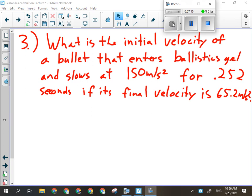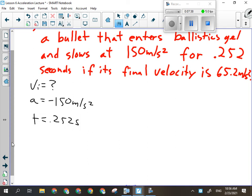We're looking for the initial velocity on this one. So we're looking for VI. It enters the ballistics gel and slows at 150 meters per second squared. What do I need to put in front of that number? Negative. For 0.252 seconds. And its final velocity is 65.2 meters per second. So this one is through and through. That means they fired at the ballistics gel and the bolt went right through and came out the other side.